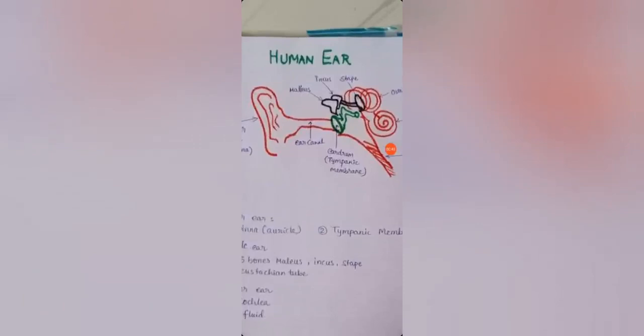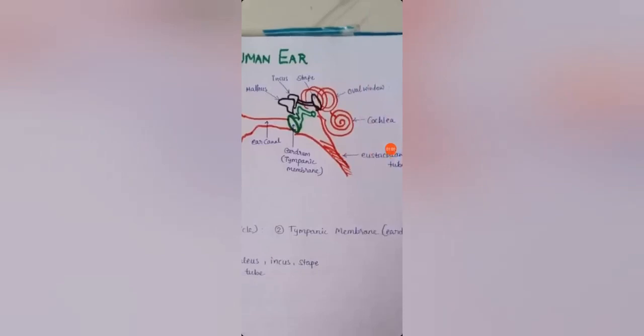That green color part is eardrum. When sound waves reach the eardrum it vibrates and then it reaches to malleus, incus and steppi, these three bones which further amplify the sound and then these sound waves travel through this oval window.